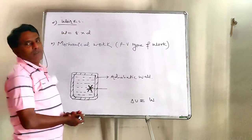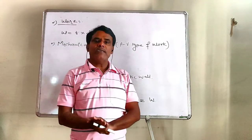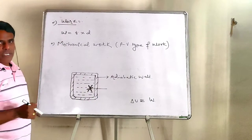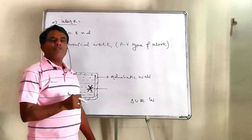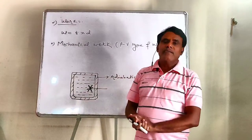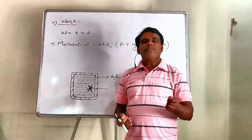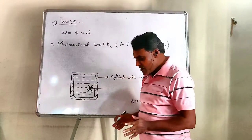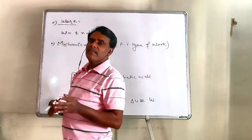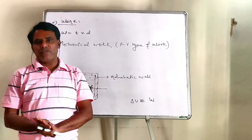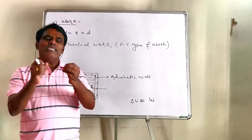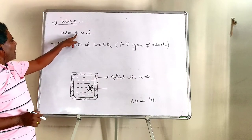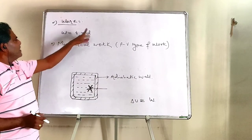The second way of changing internal energy is by work done on the system by surroundings, or by surroundings on the system. Work is said to be done if there is displacement of the point where force is applied in the direction of the applied force. Work done W is equal to force into displacement.